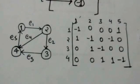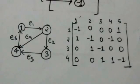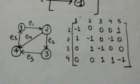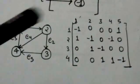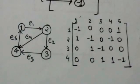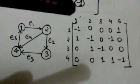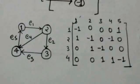There is an arc E5 from vertex 4 to vertex 1. Therefore in the incidence matrix, the entry at the fourth row and fifth column is minus 1, and the entry at the first row and fifth column is 1, and all other entries in the fifth column are 0. Thank you very much.